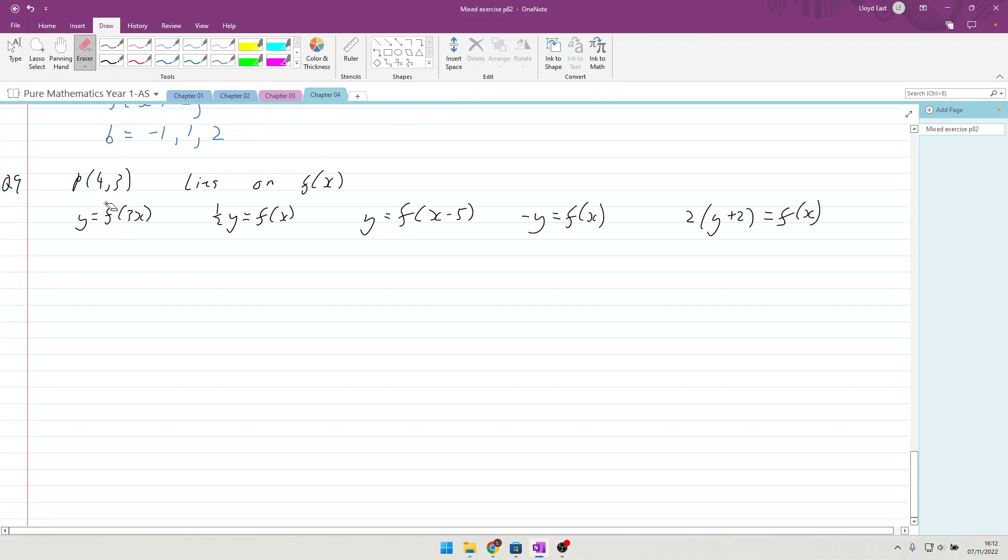Question 9: where does the point (4,3) lie? It lies on f(x). Where does it lie when we put the graph of f(x) through the transformation of f(3x)? The f(3x) compresses the horizontal axis by 1/3, which affects the x values. That means we end up with the x values being multiplied by 1/3 times the x value, and the y value stays the same, so we end up with 4/3, 3.